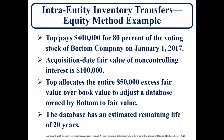An example: Top paid $400,000 for 80% of the voting stock of Bottom Company on January 1st, 2017. The non-controlling interest fair value at that time was $100,000, and there was an undervalued asset of $50,000 on the date of acquisition with a 20-year life.